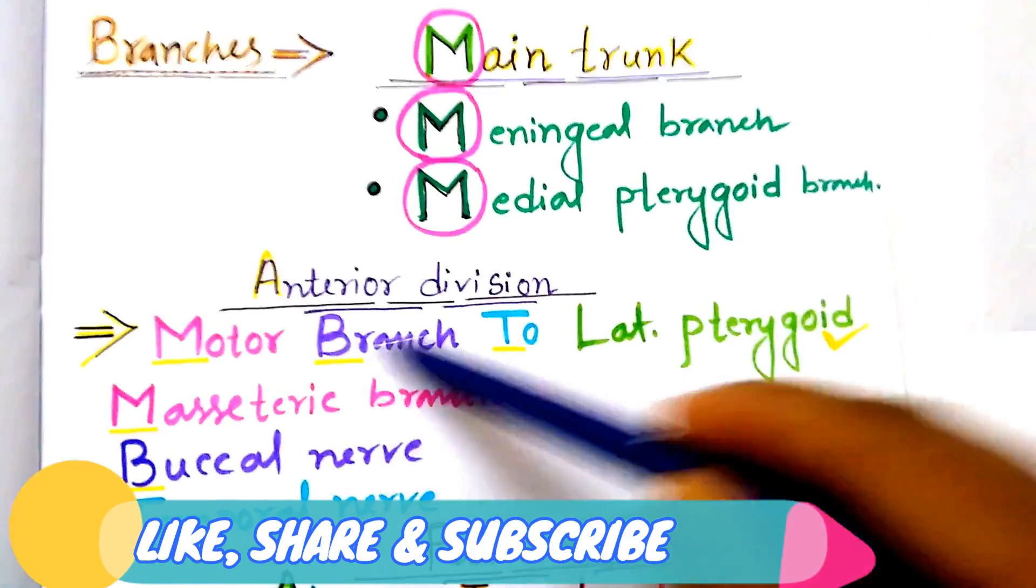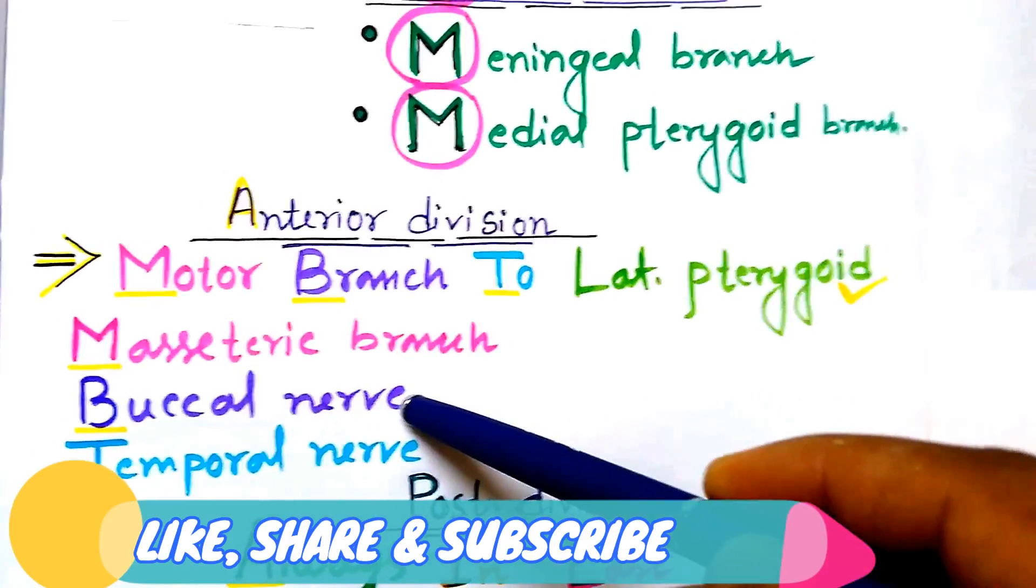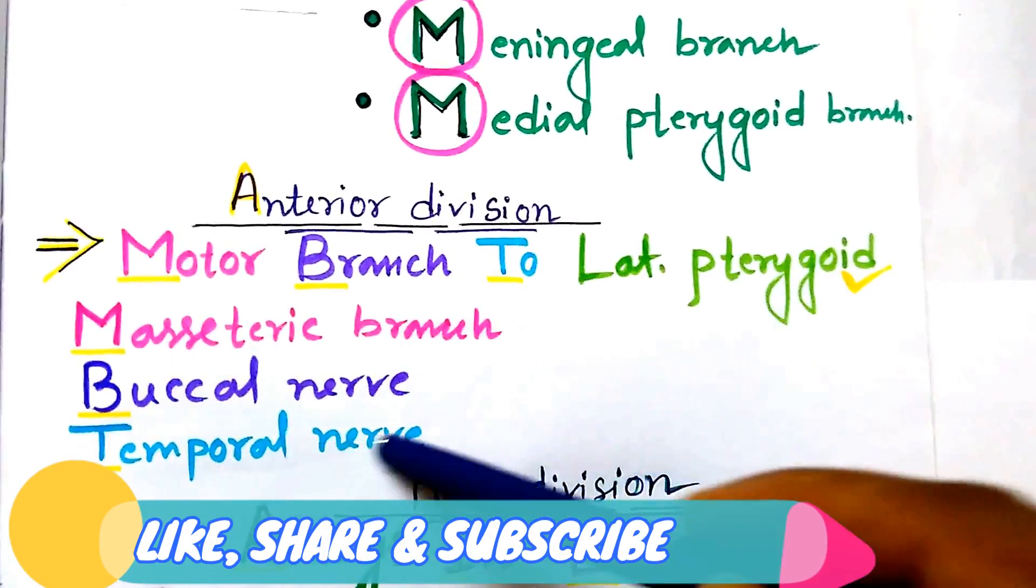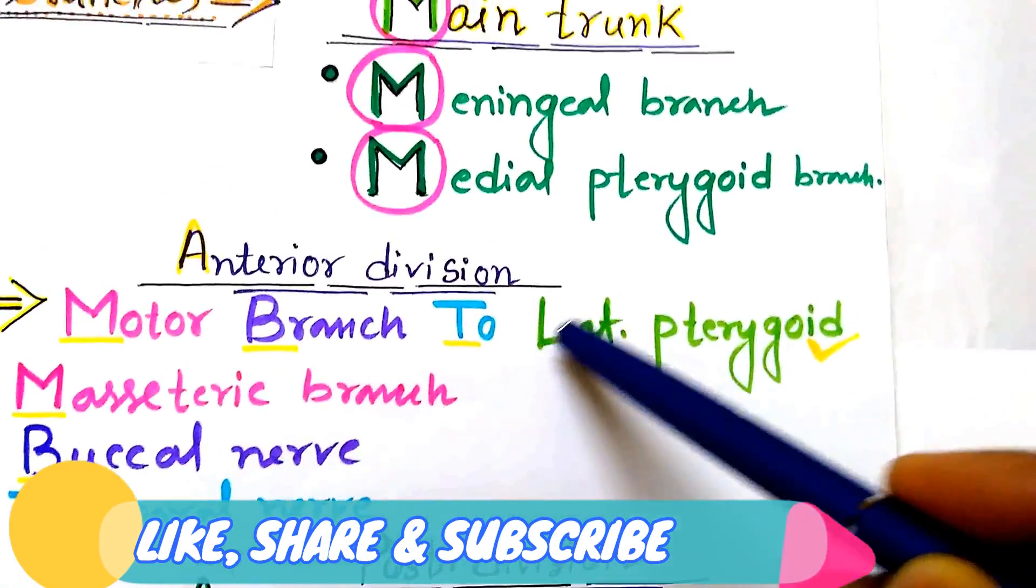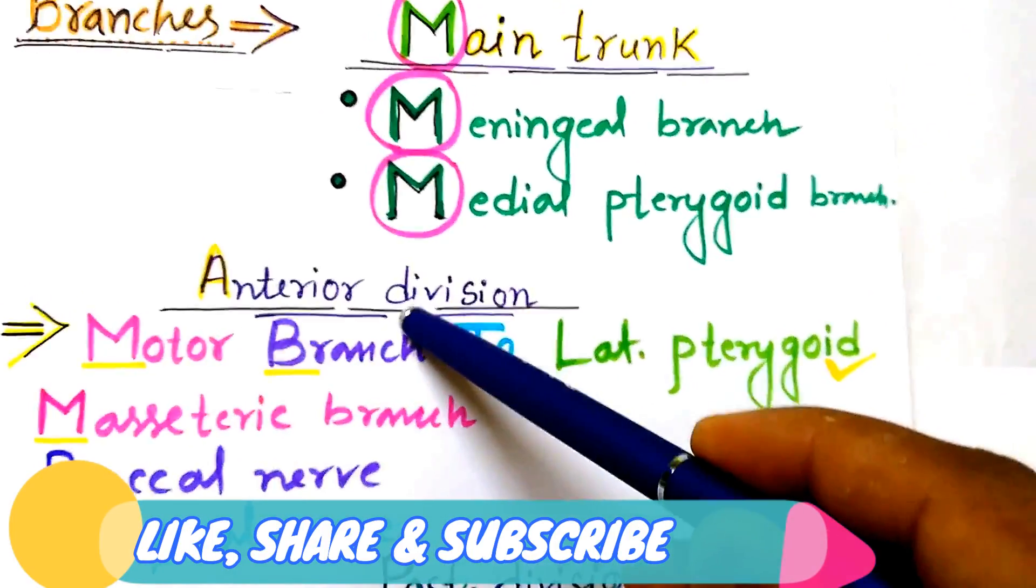This is the mnemonic: M for masseteric branch, B for buccal nerve, T for temporal nerve, and the rest is lateral pterygoid itself. That is nerve to lateral pterygoid from anterior division.